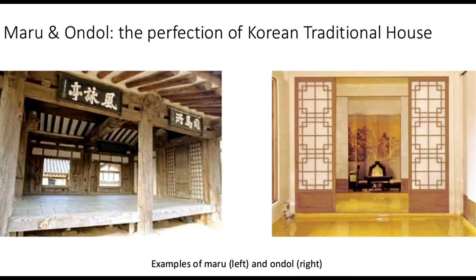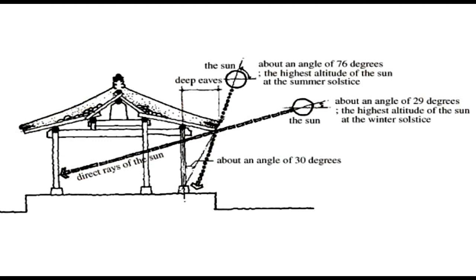Maru and ondol — the perfection of the Korean traditional house. The diagram of the maru shows deep eaves at about 76 degrees, which is the highest altitude of the sun at the summer solstice, and about 29 degrees at the highest altitude of the sun at the winter solstice.